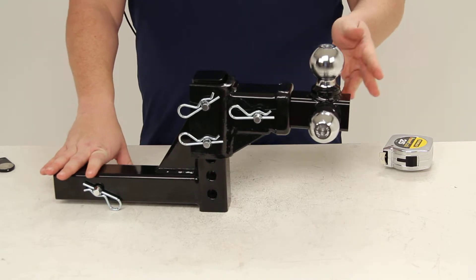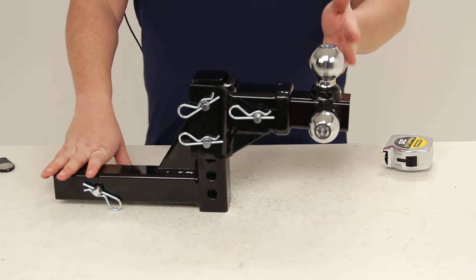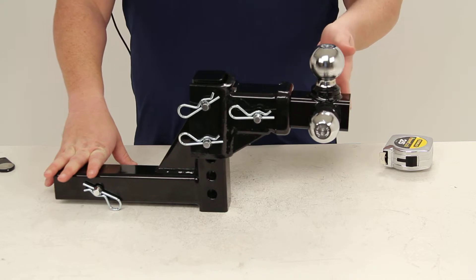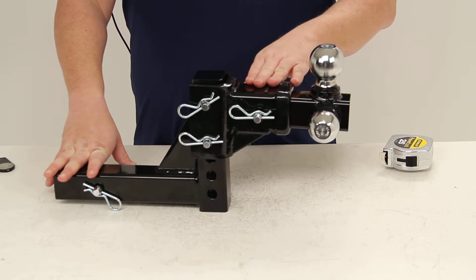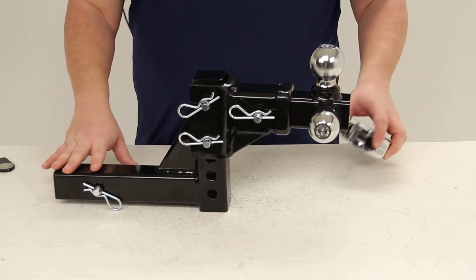It can be used with a five-eighths diameter hitch lock that is sold separately, and it comes with a black gloss finish. Let's take a look at some of the specs.